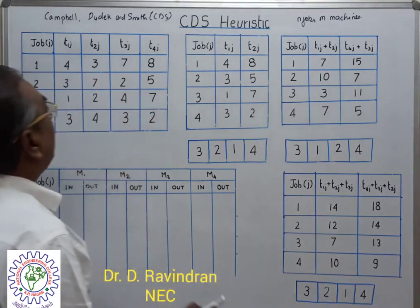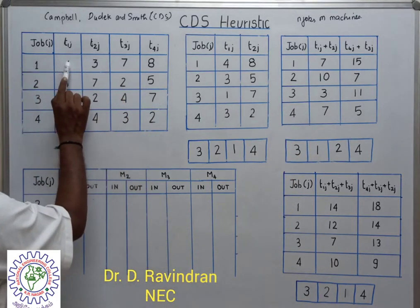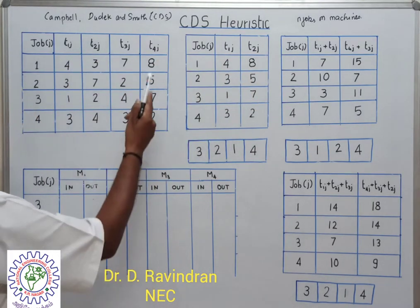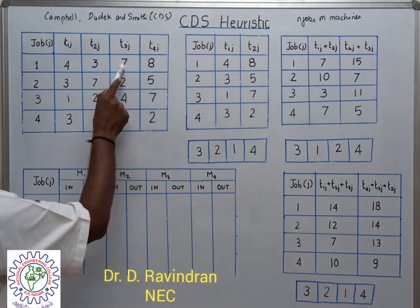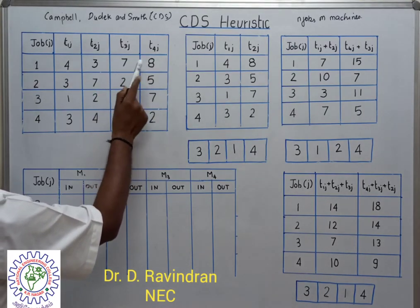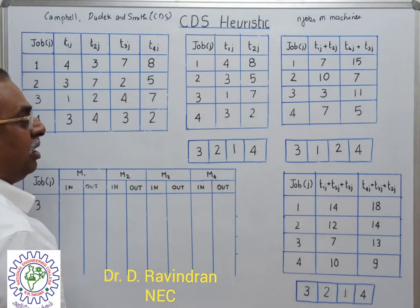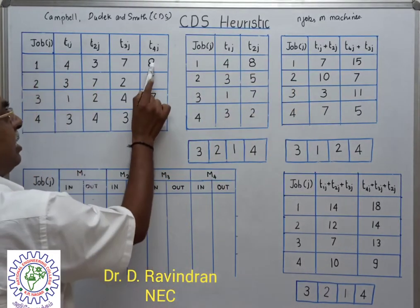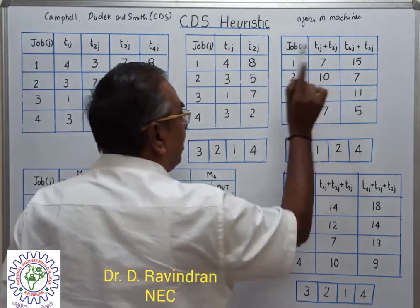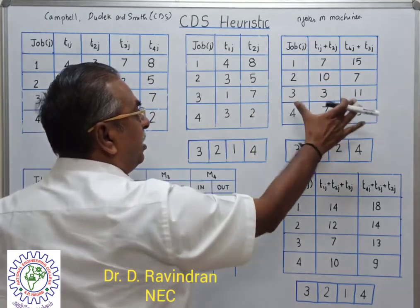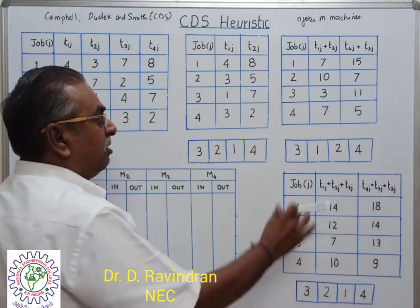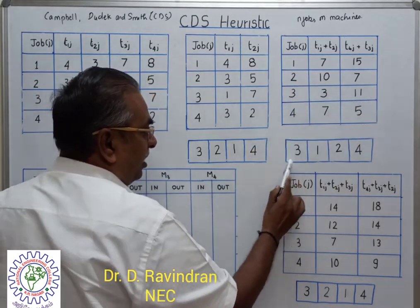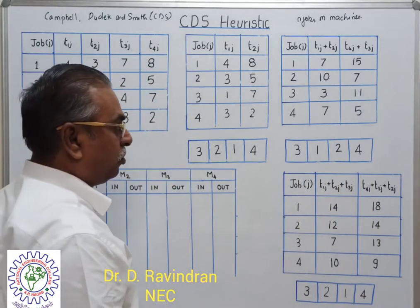In the next step, we add the first machine and second machine and consider them as an imaginary machine. Then the last machine and second-to-last machine processing times are combined to form a second imaginary machine. For example, the first imaginary machine for job 1 is 4 plus 3. The second imaginary machine is 8 plus 7. Based on these processing times, the sequence obtained is 3, 1, 2, 4.